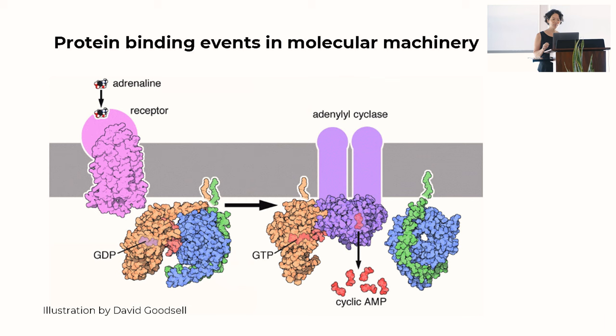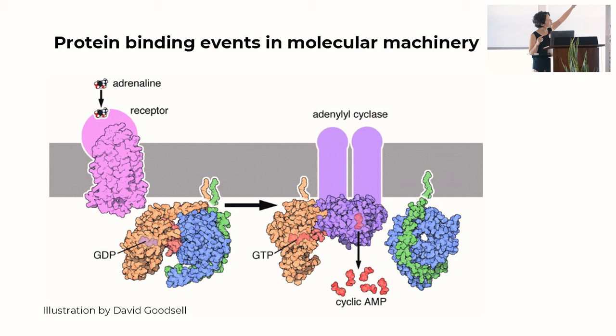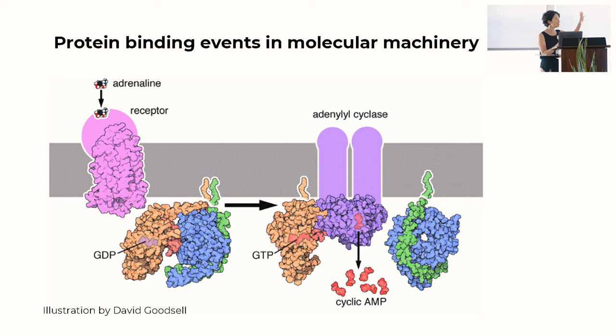In terms of molecular machinery, protein binding events are part of these cascades of biological pathways. This is just one example in a fight-or-flight response where you have this adrenaline molecule that binds to the top of a receptor on the outside of the membrane, outside of the cell, and there's this cascade of protein binding events that leads to the production of cyclic AMP, and then that leads to muscle contraction.